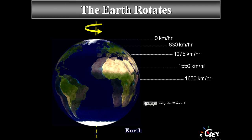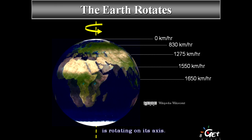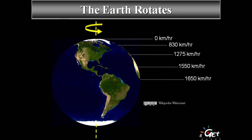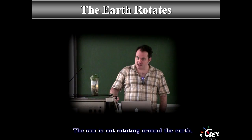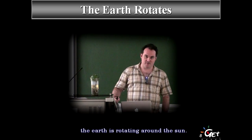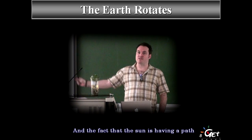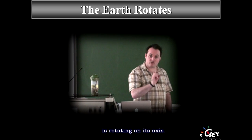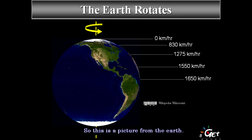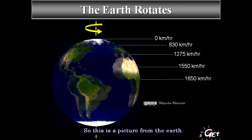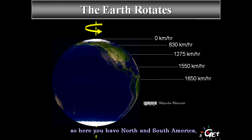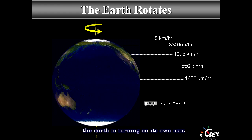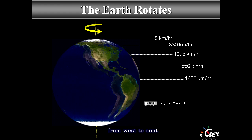Having an accurate measurement throughout the year is very important for many human activities. Earth is rotating on its axis — the Sun is not rotating around the Earth, the Earth is rotating around the Sun. The fact that the Sun traces a path through the sky during the day is just because Earth is rotating on its axis. Here is a picture of the Earth — this is the axis of rotation, with North and South America and Antarctica visible.